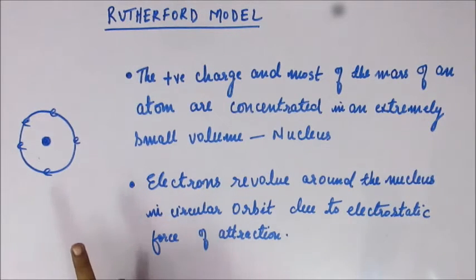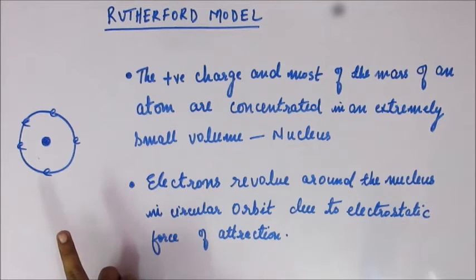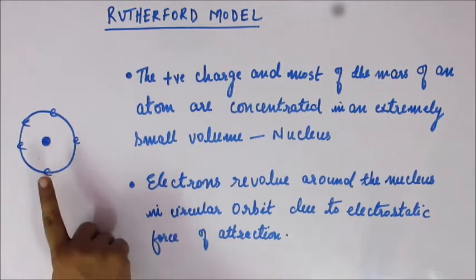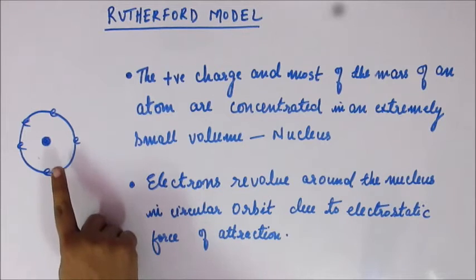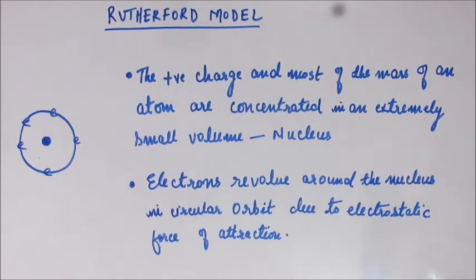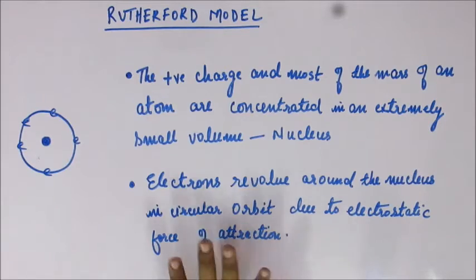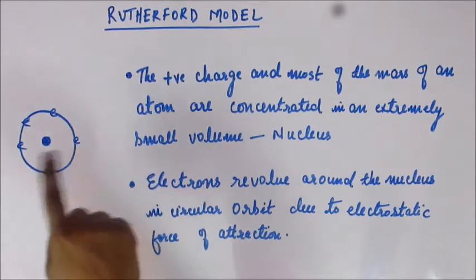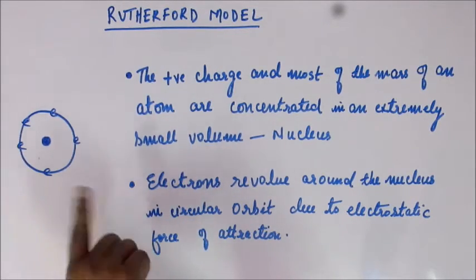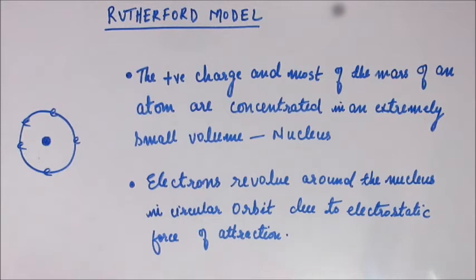The positive charge and most of the mass of an atom is concentrated in an extremely small volume, and Rutherford called that the nucleus. The electrons revolve around the nucleus in circular orbits due to electrostatic force of attraction, and this electrostatic force of attraction actually provides the centripetal force to the electron to be able to revolve around the nucleus. It's a pretty simple, straightforward model and it explains some of the discrepancy he found in J.J. Thomson's model.